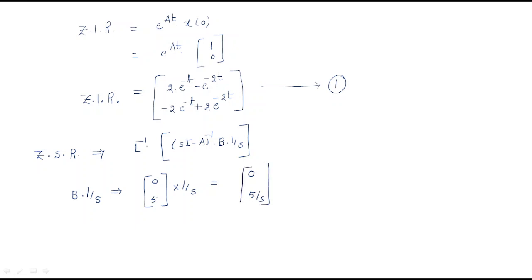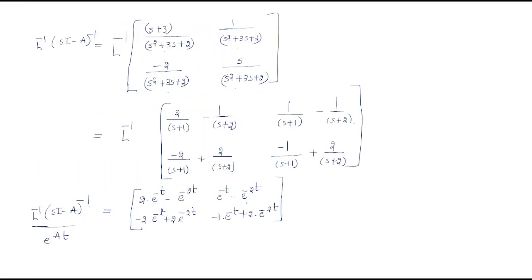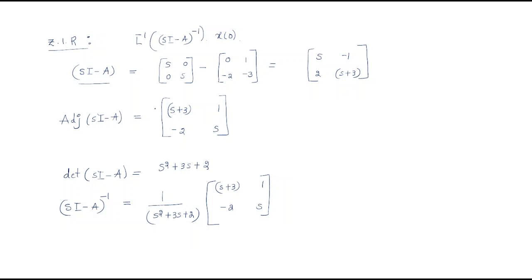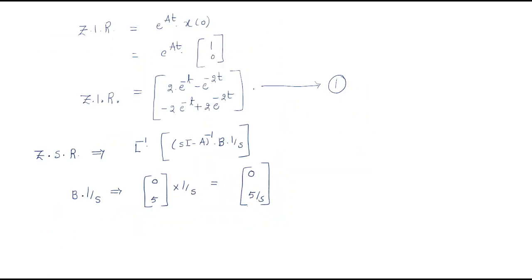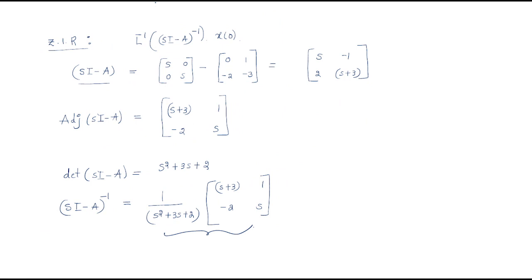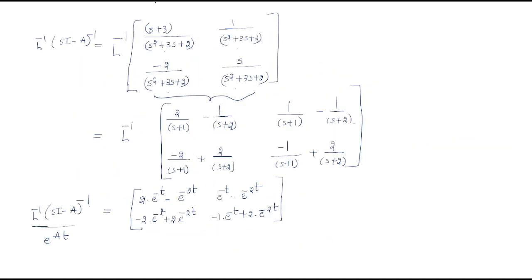Now we look at (sI - A)⁻¹. The elements of (sI - A)⁻¹ are written out. The first element is (s+3) / (s² + 3s + 2), and the second element is 1 / (s² + 3s + 2).